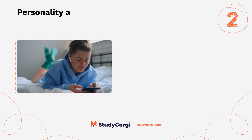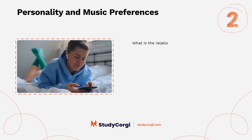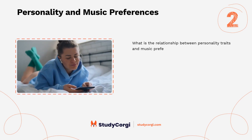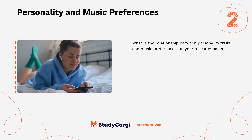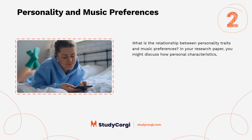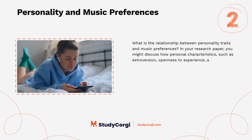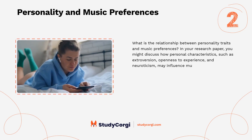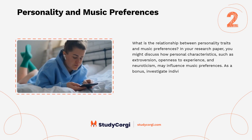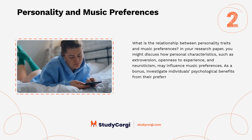Personality and Music Preferences. What is the relationship between personality traits and music preferences? In your research paper, you might discuss how personal characteristics, such as extroversion, openness to experience, and neuroticism may influence music preferences. As a bonus, investigate individual psychological benefits from their preferred music genres.